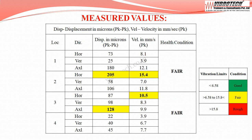The vibration values are maximum at the motor drive end horizontal — velocity up to 15.4 mm/s peak with displacement of 205 microns peak-to-peak — and at the pump drive end horizontal, velocity up to 10.5 mm/s peak and displacement of 128 microns peak-to-peak. The equipment falls under the fair category.